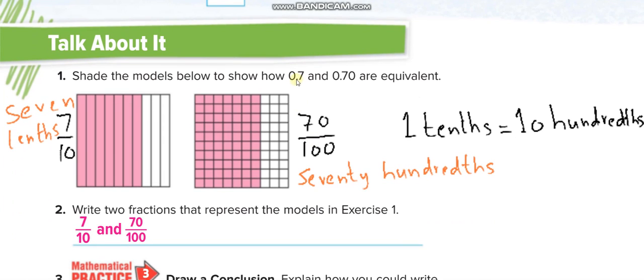Now 0.7 and 0.70. For 0.7, the fraction is 7 over 10, and 0.70 is 70 over 100. Word form: 7 tenths, and 70 hundredths.